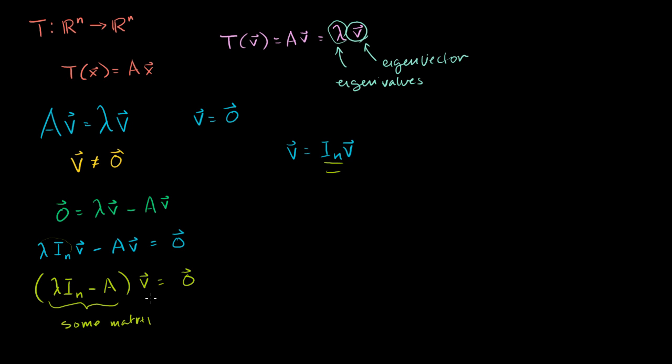Now, if we assume that this is the case, and we're assuming that v does not equal 0, what does this mean? We know that v is a member of the null space of this matrix right here. v is a member of the null space of lambda I sub n minus A. I know that might look a little convoluted to you right now, but imagine this is just some matrix B. This is just some matrix here. Let's make that substitution.